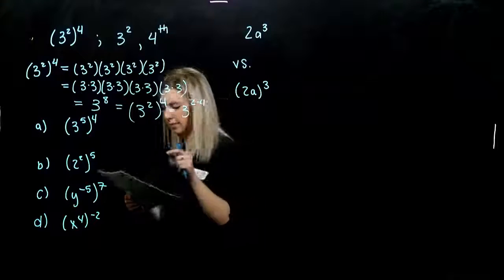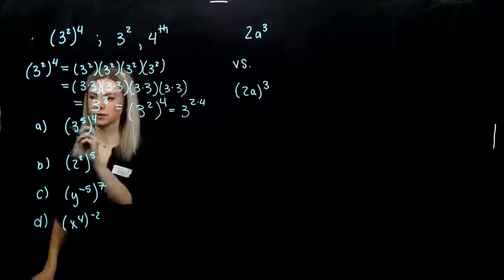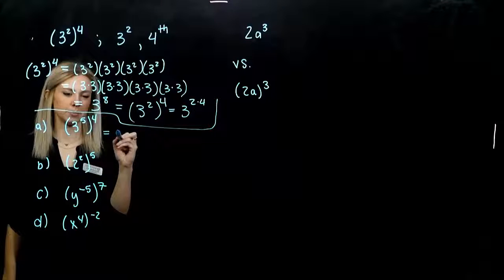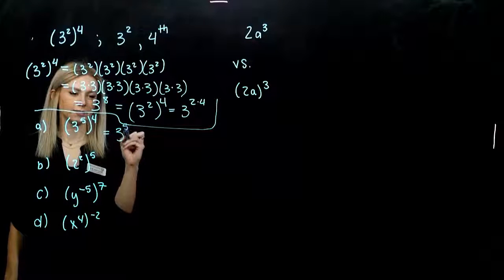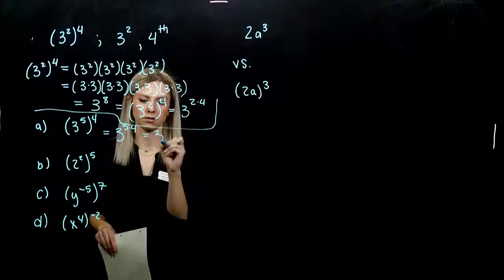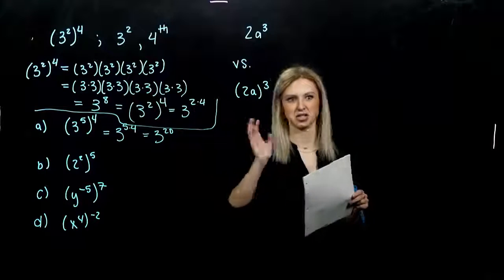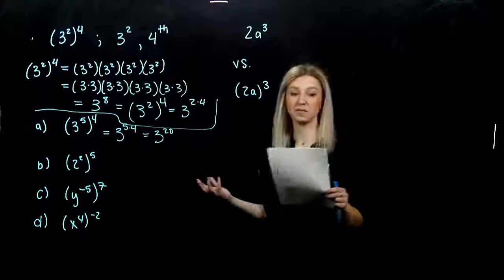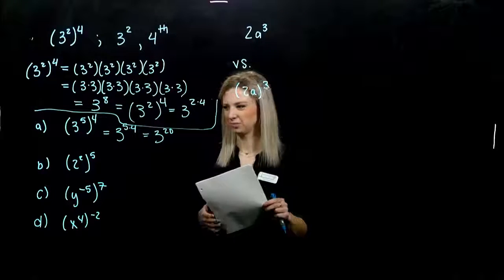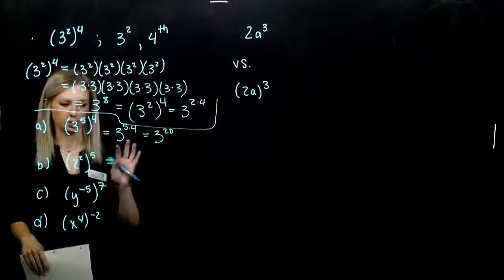So we want to start simplifying and write these with positive exponents. For the first one, I'm raising a power to a power, so this is going to be three raised to the five times four, which is three to the twentieth — twenty factors of three being multiplied together. Imagine having to write it all out and count them. If you forget these rules you can always fall back on that, but it's time consuming. We have positive exponents, so we're done.